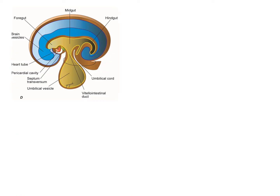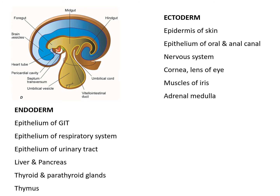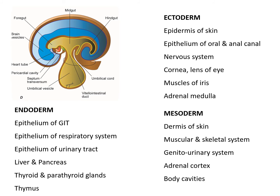The second major change during the embryonic period is differentiation of the three germ layers. Ectoderm and its derivatives include the protective epidermis of skin and epithelium of oral and anal canals; neuroectoderm forms the neural tube and neural crest cells, giving rise to the nervous system, cornea, lens of eye, muscles of iris, and adrenal medulla. Endoderm forms the gut tube; its derivatives are the epithelium of the gastrointestinal, respiratory and urinary tracts, and glands including liver, pancreas, thyroid, parathyroid, and thymus. Mesodermal derivatives are mainly musculoskeletal and connective tissue: dermis of skin, muscular and skeletal system, parts of the genitourinary system, adrenal cortex, and body cavities.